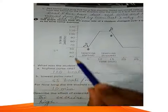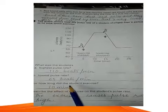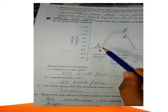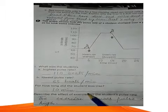This is your graph. From here, you have to answer. What was the student's highest pulse rate? It is 110. Lowest pulse rate? It is 65. For how long did the student exercise? From 5 to 15, it means for 10 minutes.